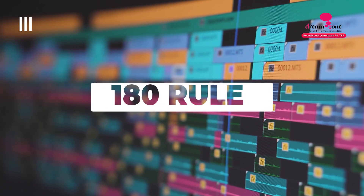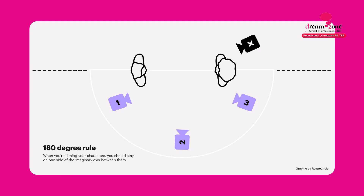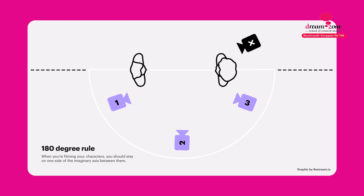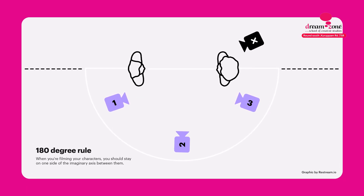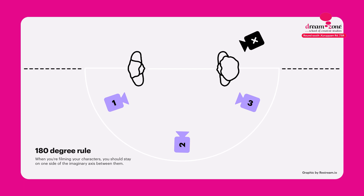This is the 180-degree rule. There is an imaginary line. If you shoot in a dialogue scene, we set an imaginary line with these two characters. Then we shoot over the shoulder. Then we shoot at the left, then we cross the right, then we shoot the left.